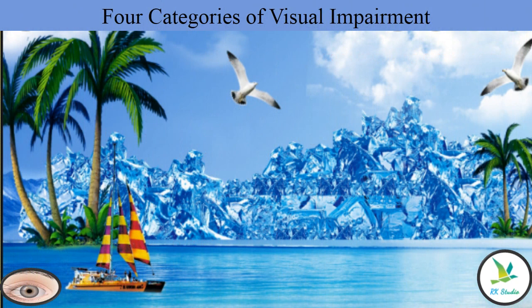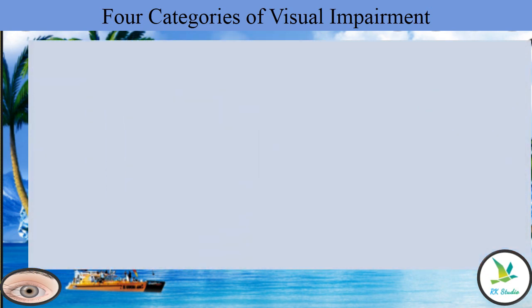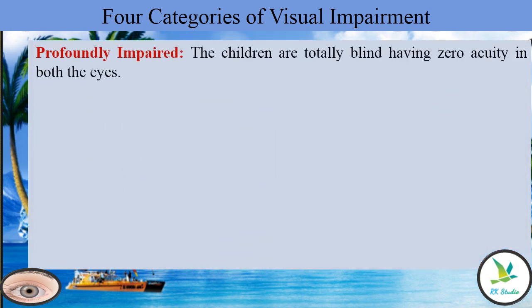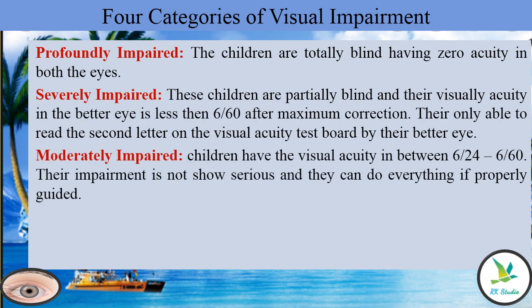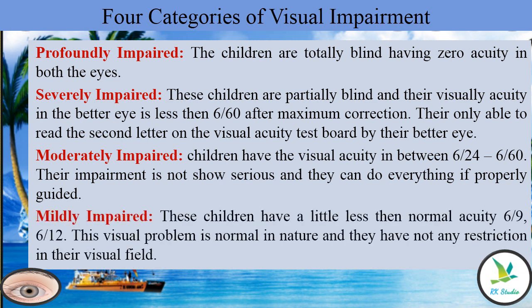There are 4 categories of visual impairment: profoundly impaired, severely impaired, moderately impaired, and mildly impaired.